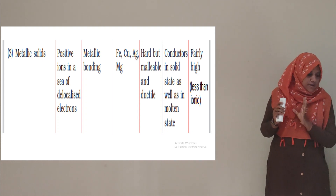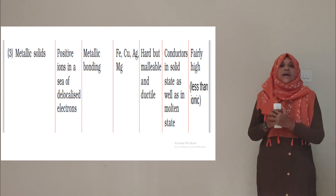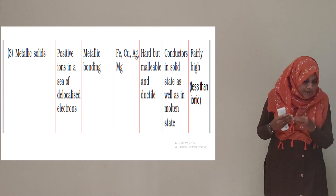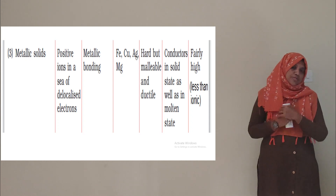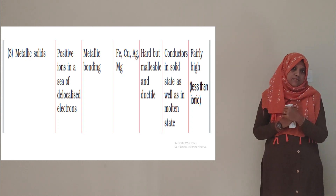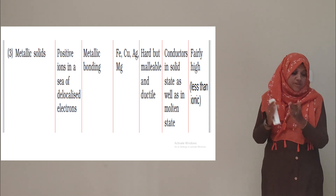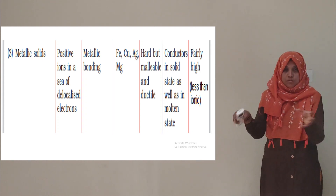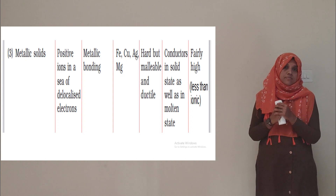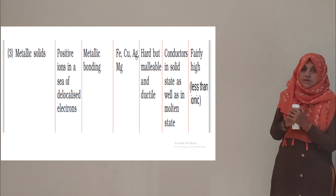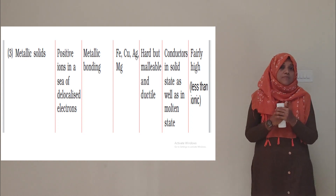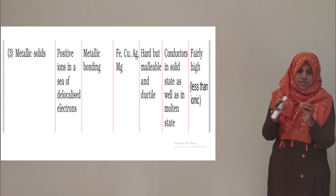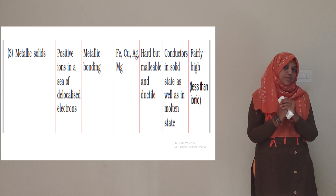Metallic solid consists of positive ions and mobile free electrons spread throughout the crystal. That is the constituent particles are positive ions and mobile free electrons spread throughout the crystal.